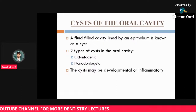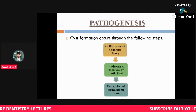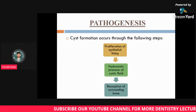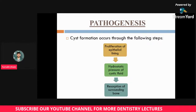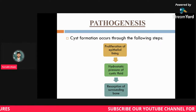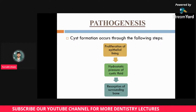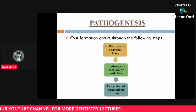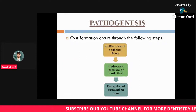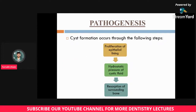How does a cyst form? This is the pathogenesis — a very important viva question. First, there is proliferation of the epithelial lining cells. Then there is hydrostatic pressure of cystic fluid, which causes resorption of the surrounding bone. In this way a cyst is formed.